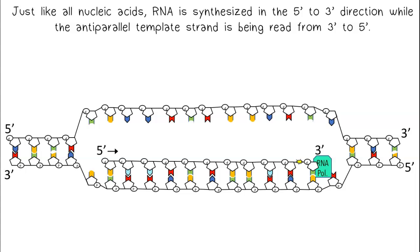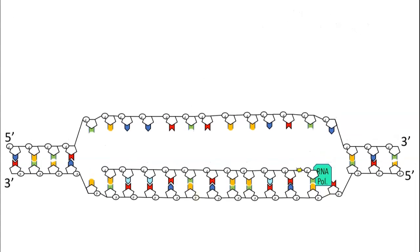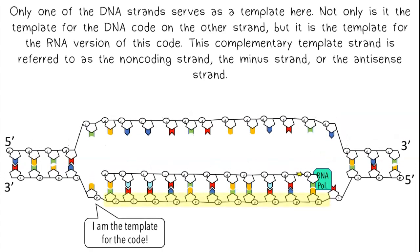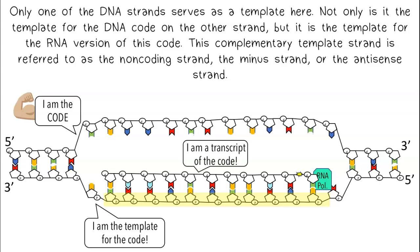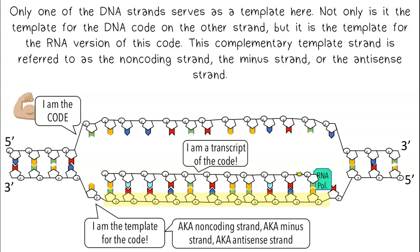Just like all nucleic acids, RNA is synthesized in the 5' to 3' direction, while the anti-parallel template strand is being read from 3' to 5'. Only one of the DNA strands serves as a template here. Not only is it the template for the DNA code on the other strand, but it is the template for the RNA version of this code. This complementary template strand is referred to as the non-coding strand, the minus strand, or the anti-sense strand.